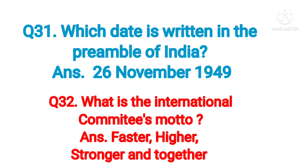Question number thirty: what does ISRO stand for? Answer: Indian Space Research Organisation. Question number thirty-one: which date is written in the Preamble of India? Answer: 26 November 1949.